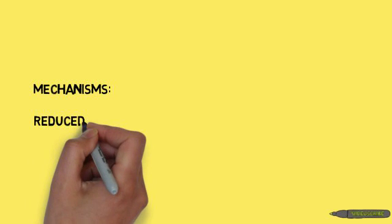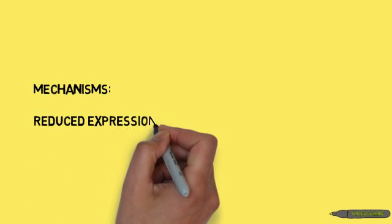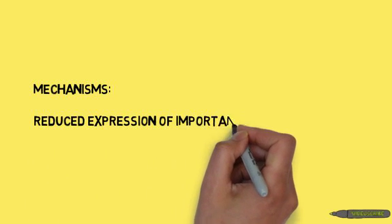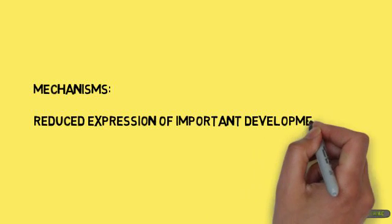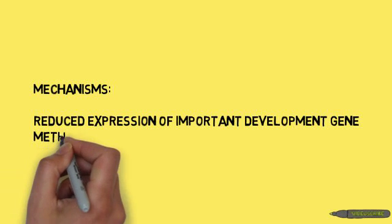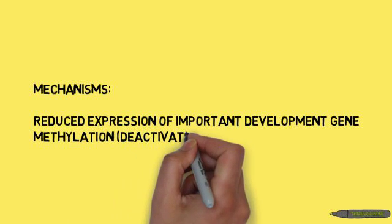Some of the mechanisms by which diethylstilbestrol exerts effects are by reducing the expression of an important development gene and increasing its methylation, deactivating some functions.